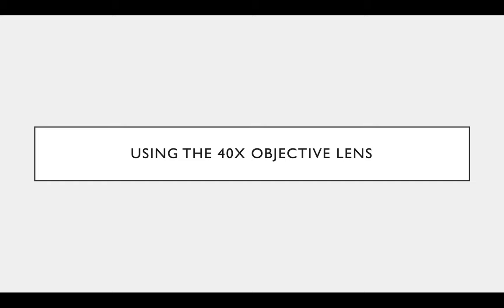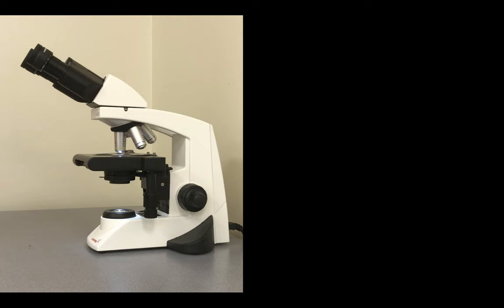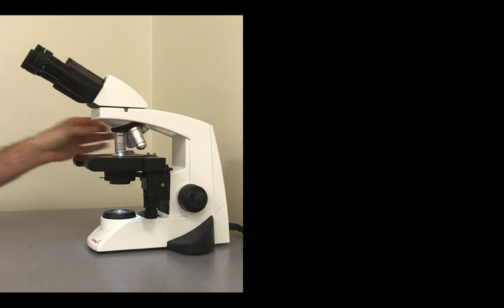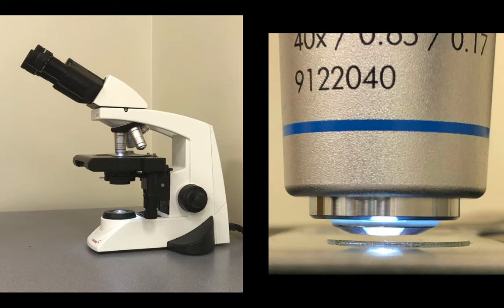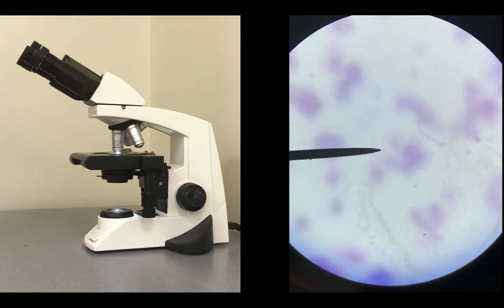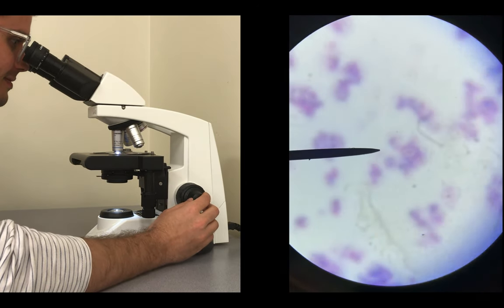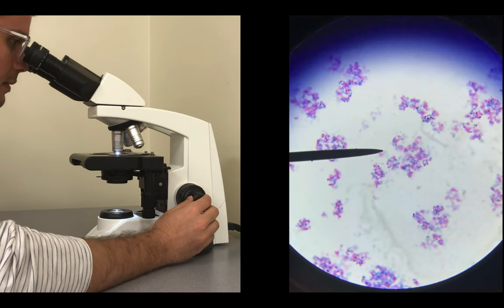Let's use the 40x objective lens. This lens is going to magnify an object 40 times in addition to the ocular lens, which magnifies an object 10 times — so altogether it's 40 times 10, or 400 times magnification. Switch between the objective lenses using the nose piece, not the lenses. We're getting pretty close — that's the distance between our objective lens and the slide — so we're only going to use the fine knob to avoid cracking the lens.